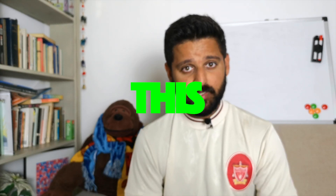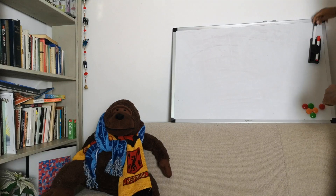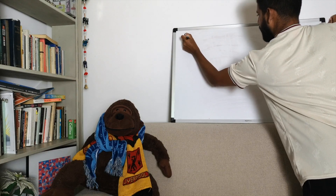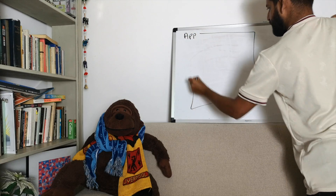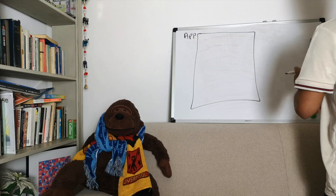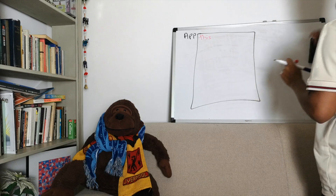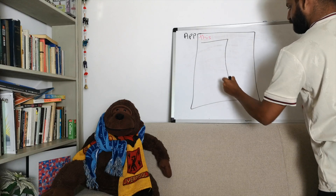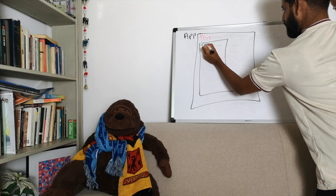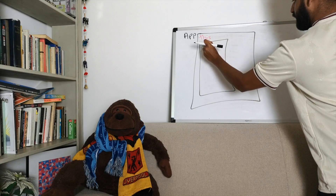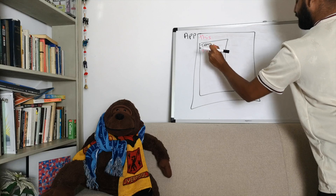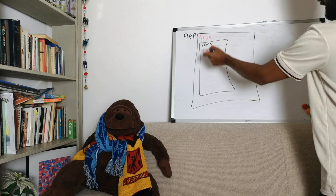An important concept to understand when it comes to bind, call, and apply is the `this` keyword. Any object or function that you create will have a reference to itself which it knows as `this`. So if you imagine our app — this is our football app — it will have a context, its own `this`. Now let's imagine that we've also got a football team, and because it's an object or a function or a class, it too has its own context of `this`.